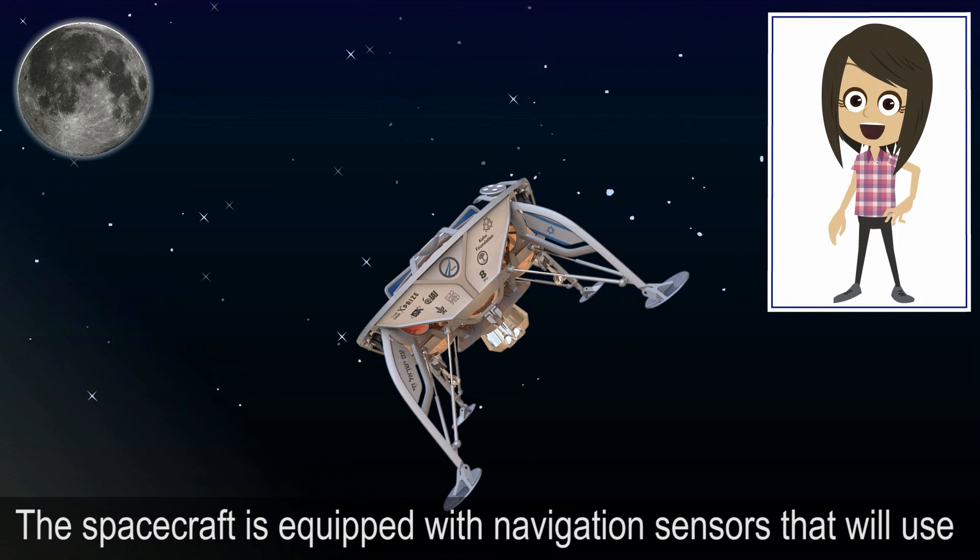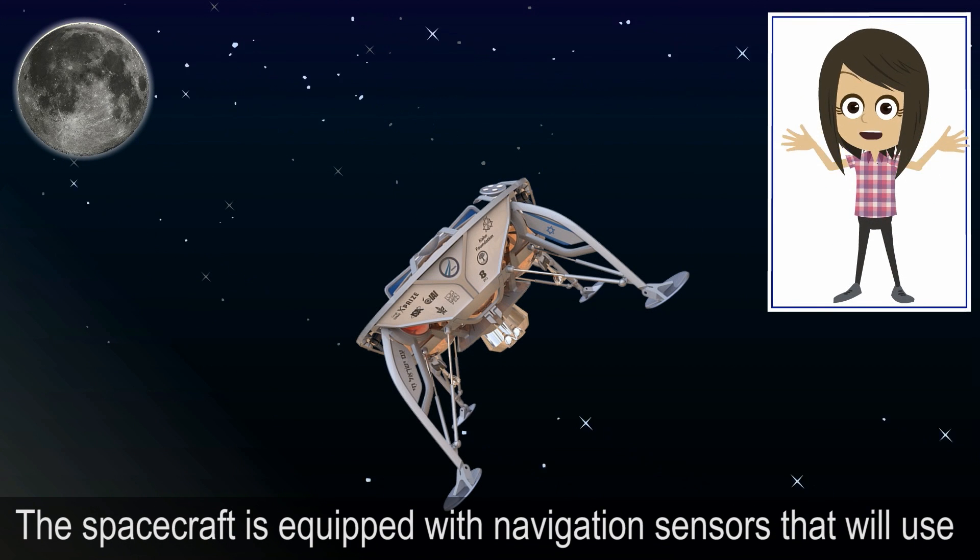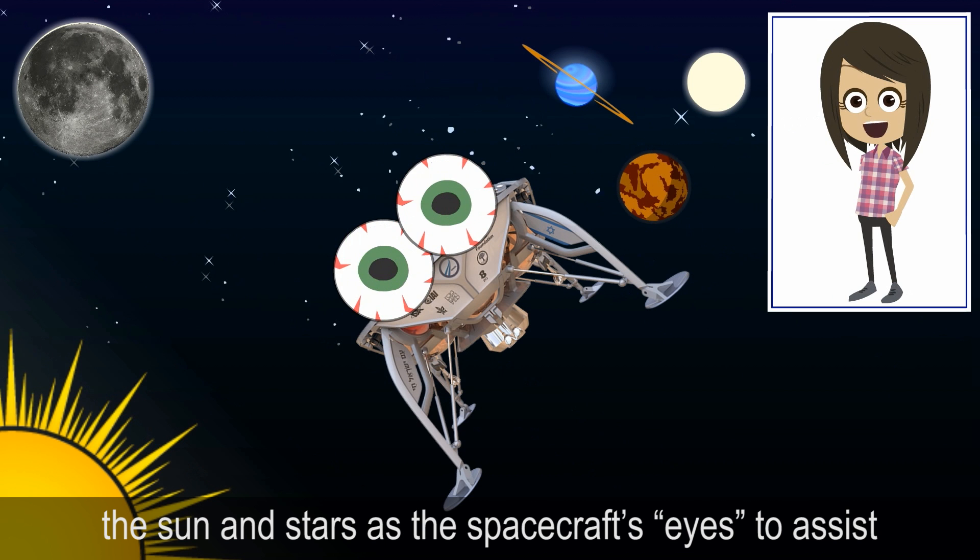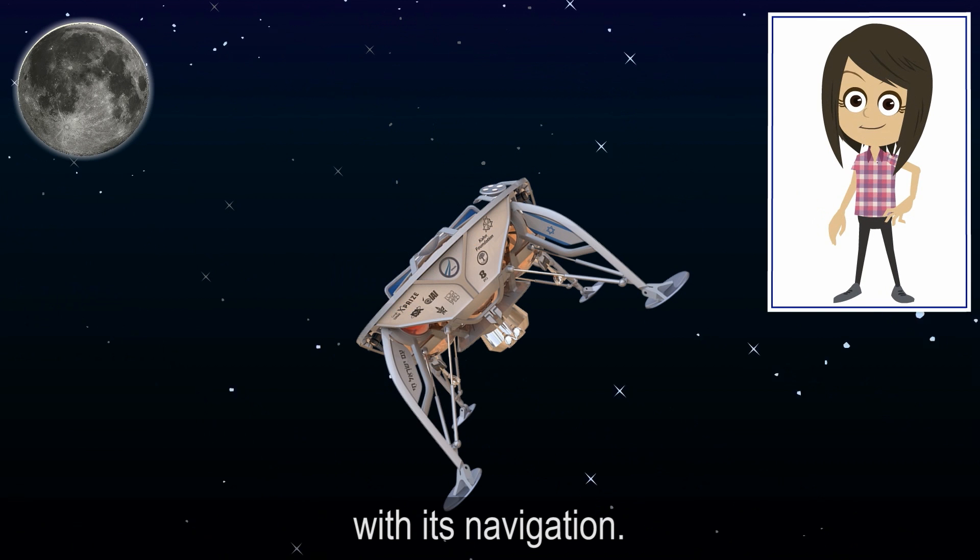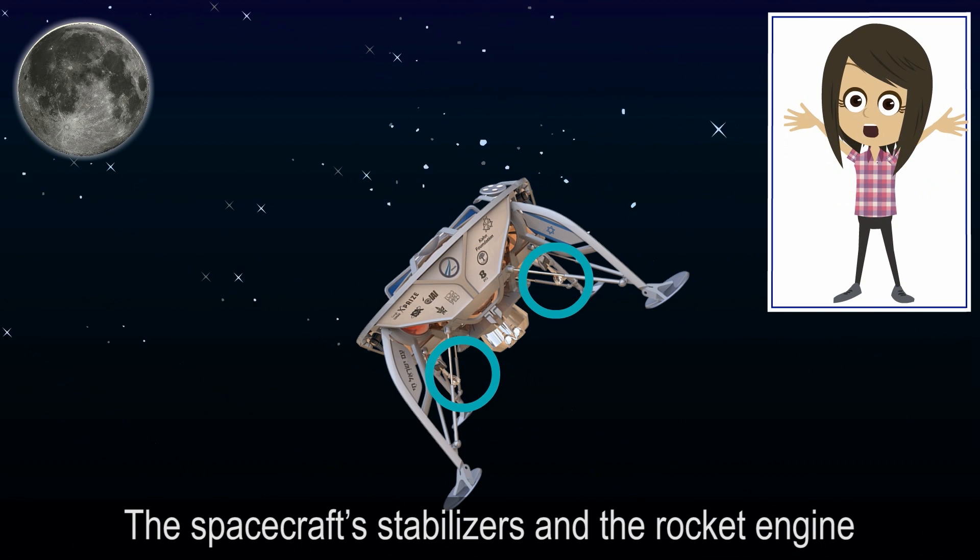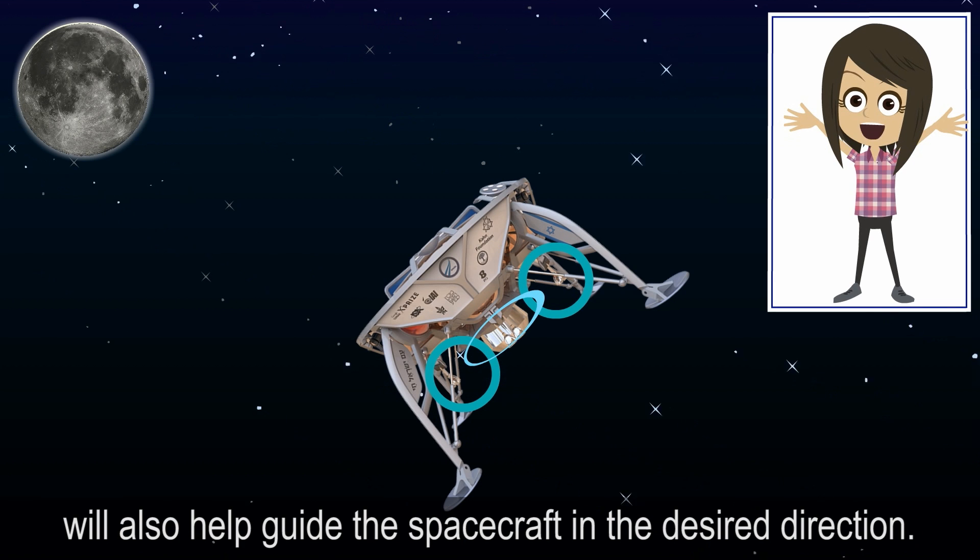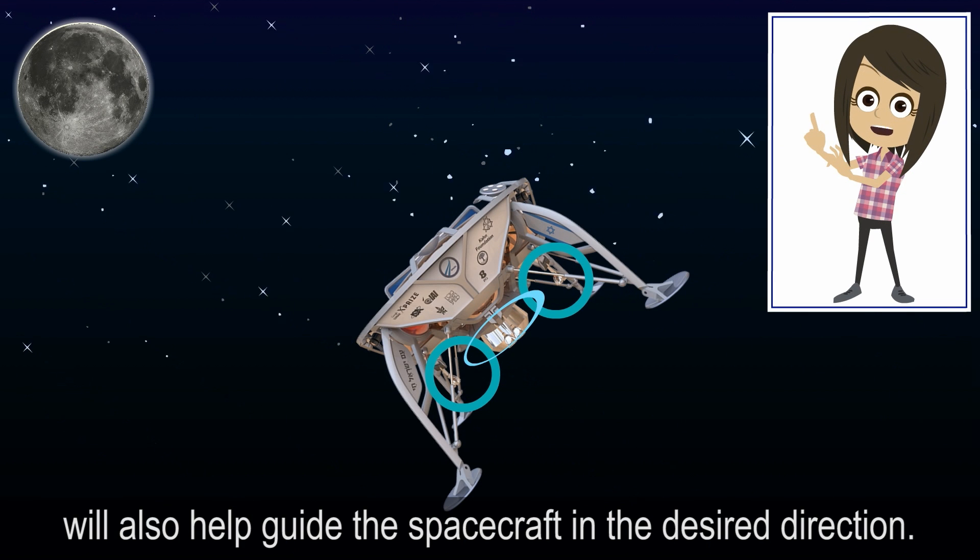The spacecraft is equipped with navigation sensors that will use the sun and stars as the spacecraft's eyes to assist with its navigation. The spacecraft's stabilizers and the rocket engine will also help guide the spacecraft in the desired direction.